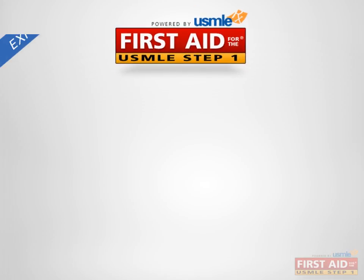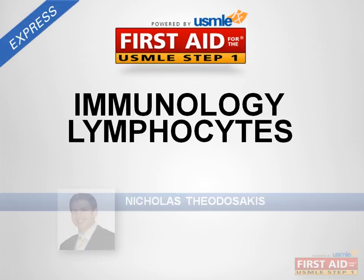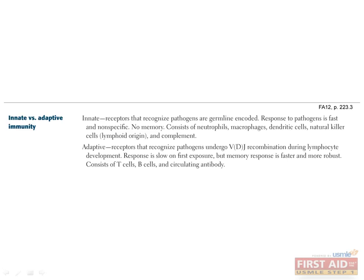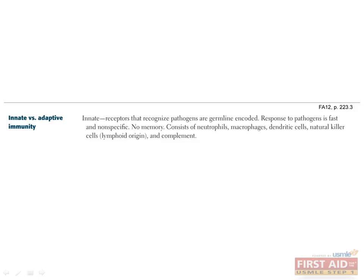Let's review the different cells of the immune system. First, let's discuss innate and adaptive immunity. These are important concepts in understanding the immune system. In particular, as we discuss different disease processes, try to think about which branch of the immune system is predominant in guiding the body's response to disease.